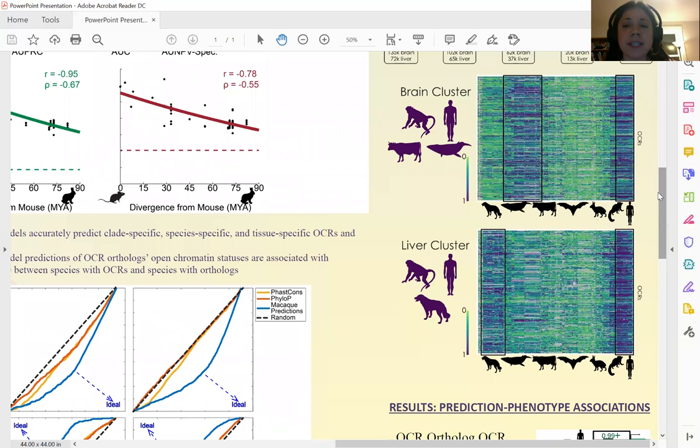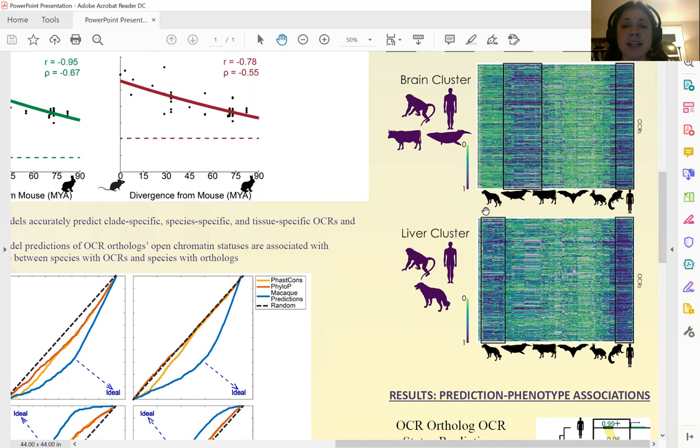Here you can see a couple of our clusters. In this brain cluster we see that the orthologs are predicted to be open in primates, in cetaceans, and in ungulates, but not in other mammals. In this liver cluster we see that the orthologs are predicted to be open in primates and carnivora, but not in other mammals. Thus, these open chromatin regions in these clusters may be involved in convergent evolution.